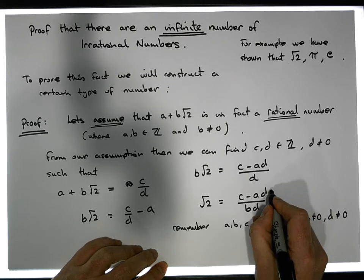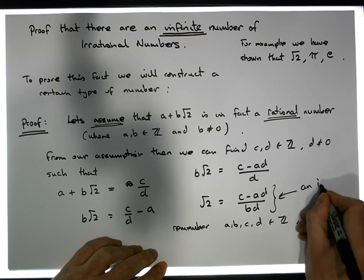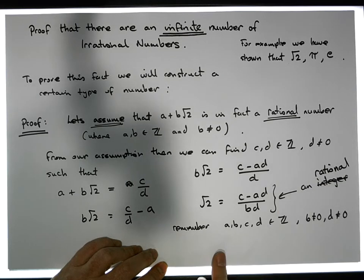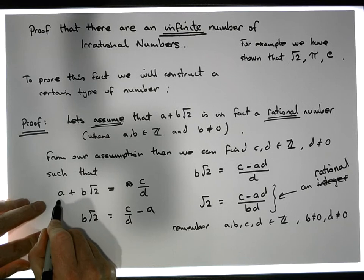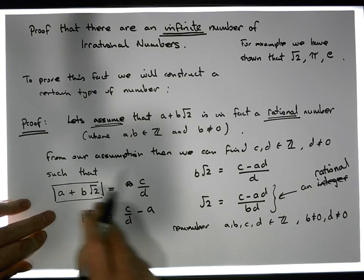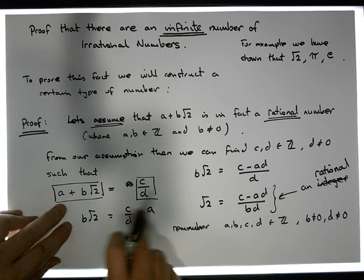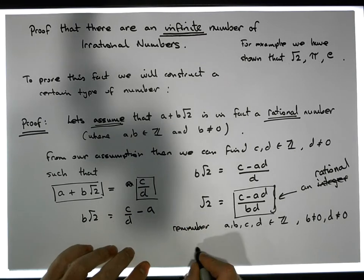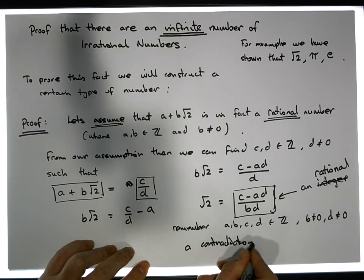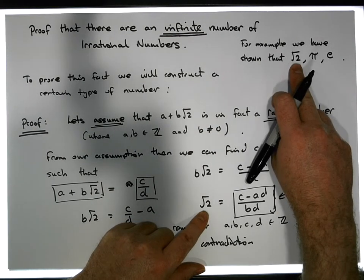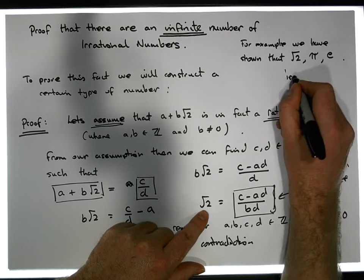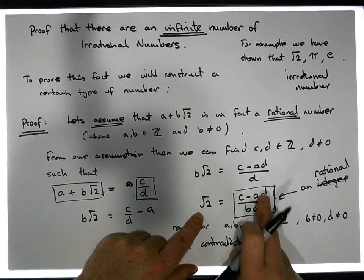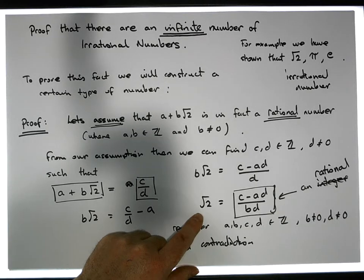So from this particular fact, what we actually have here is a rational number — we have a fraction, a rational number. From our initial assumption that a plus b root 2 can be written as a rational number, what we've arrived at is the fact that the square root of 2 is, in fact, a rational number — which is a contradiction. Earlier on, in one of our earlier proofs, we've shown that the square root of 2 is, in fact, an irrational number. But what we've shown through our assumption here is that the square root of 2 actually can be written as a fraction, which is a contradiction.